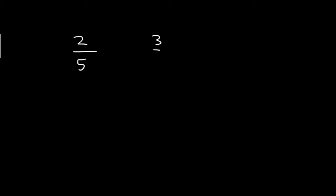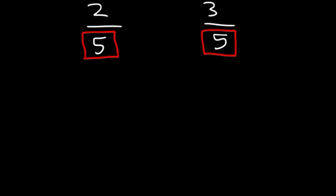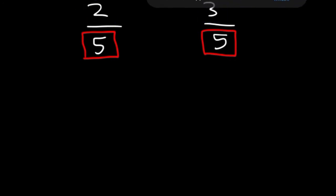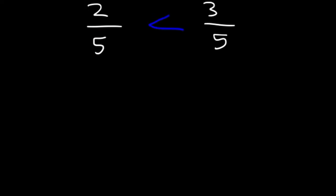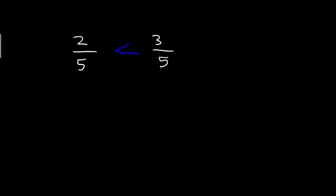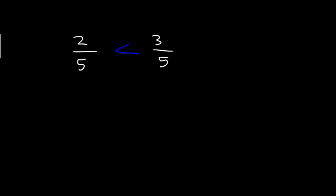Consider 2 by 5 and 3 by 5. Can you say which fraction is greater? In this, the denominator is the same — both are 5. When the denominator has the same value, check the numbers on top, that is the numerator. The first one is 2 and the second one is 3. Which is greater? Yes, 3. So 3 by 5 is the greatest fraction — that is 2 by 5 less than 3 by 5. That is the less than symbol.